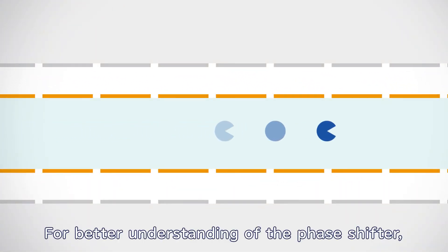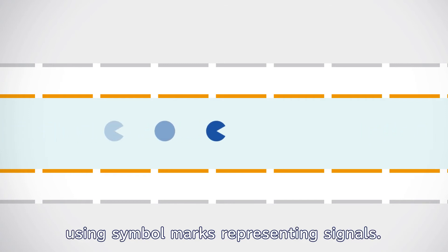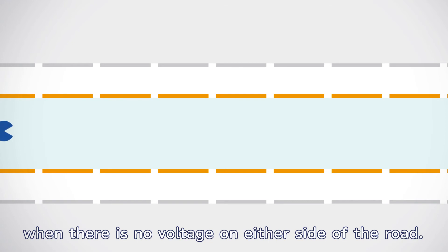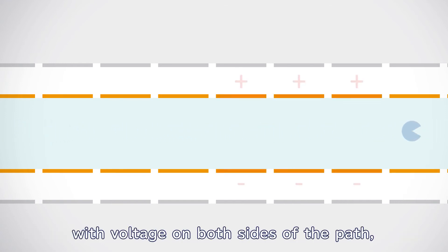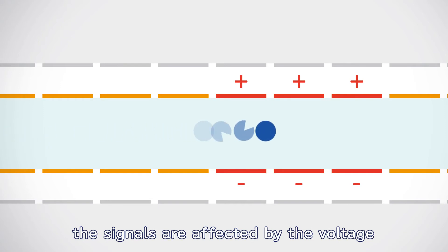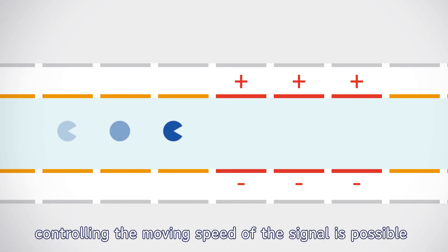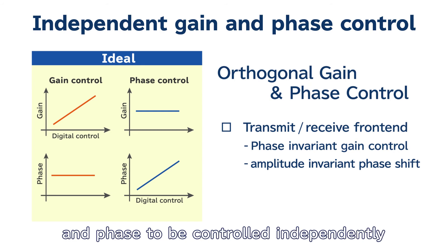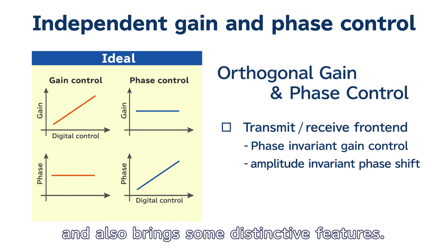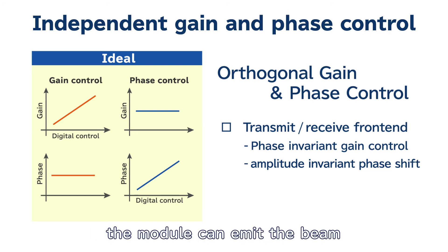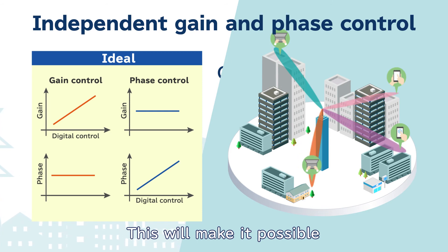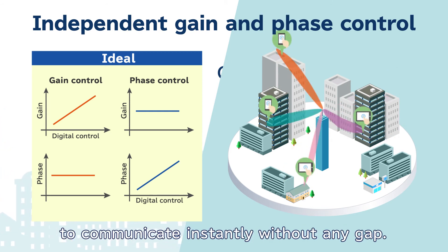For better understanding of the phase shifter, signal transmission is explained using symbol marks representing signals. The signals pass straight through the path when there is no voltage on either side. On the other hand, with voltage on both sides of the path, the signals are affected by the voltage and slow down. In this way, controlling the moving speed of the signal is possible by adjusting the voltage. This unique system allows the signal gain and phase to be controlled independently, and also brings some distinctive features. For example, the module can emit the beam at a desired angle with a simple calculation without calibration, making it possible to direct the beam at the target to communicate instantly without any gap.